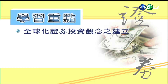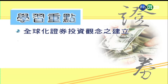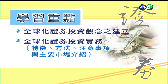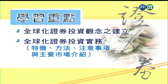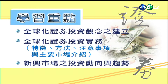在这个第14讲，我们的学习重点有三个大重点。首先第一点，针对全球化证券投资的观念建立，包括国际投资与全球投资的差别，以及什么叫海外证券，这些基本观念先厘清。接下来第二个重点是全球投资的实务，介绍全球化证券投资的特征、方法、注意事项，以及重要市场的基本介绍。另外就是针对新兴市场的投资动向跟趋势做简单说明。